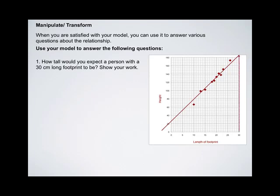Once we do this, we can go to someone who's 30 cm footprint. From there, extended up to our trend line, we can extend over and see that we would expect them to be over 180 cm tall.